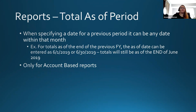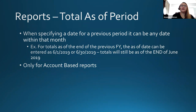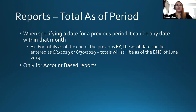The next thing to flip to is talking about the 'total as of period.' This is only for account-based reports. I showed the example on the PO detail of how you can go back and run a date range, but I also mentioned that now we can look back for the account-based reports too — and this is how you're able to do that.